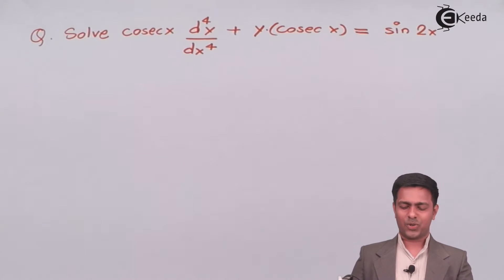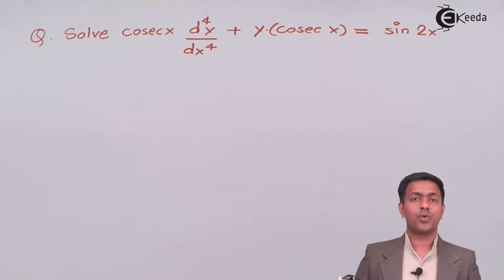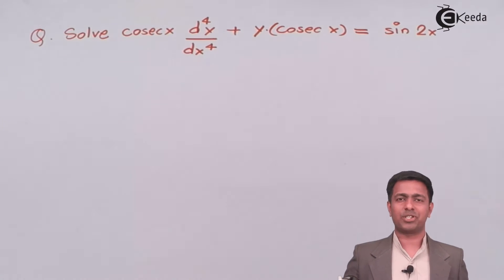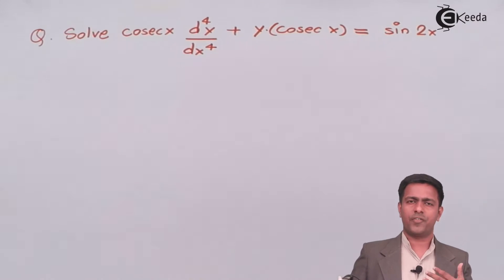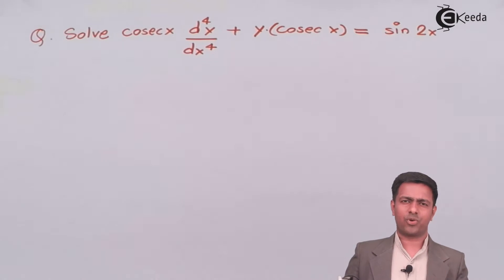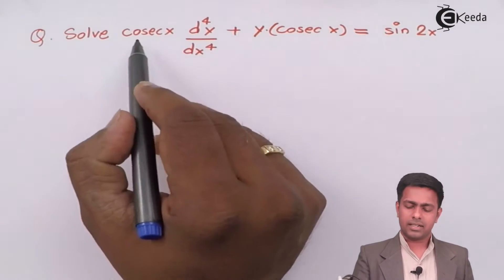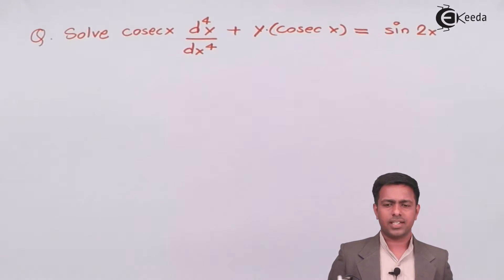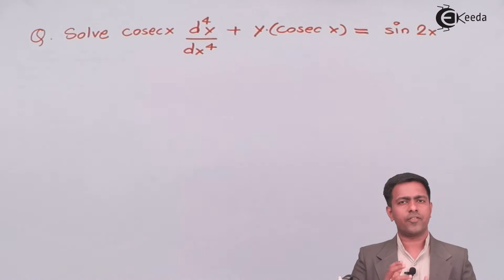Here we have to solve cosec x · (d⁴y/dx⁴) + y·cosec x = sin 2x. Observe this equation — it is not a higher order differential equation with constant coefficients, because the coefficient of the differential term contains variable x, so you can't say it's a constant.